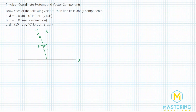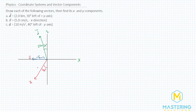For vector v, we have 5 centimeters per second in the negative x direction, so we have negative 5 centimeters per second. And lastly, for vector a, we have 10 meters per second squared, 40 degrees left of the negative y-axis. So negative y and we're 40 degrees to the left — this is vector a, this is vector v, and this one was 10 meters per second squared.